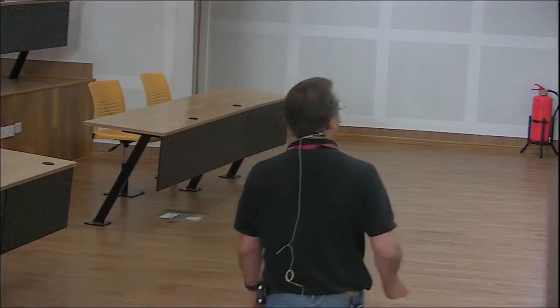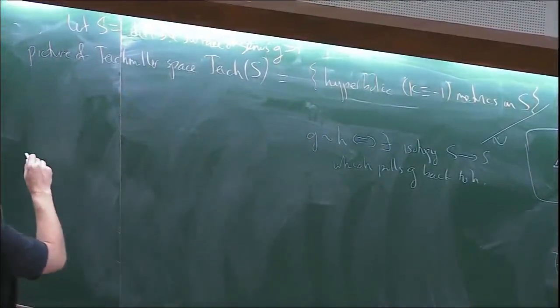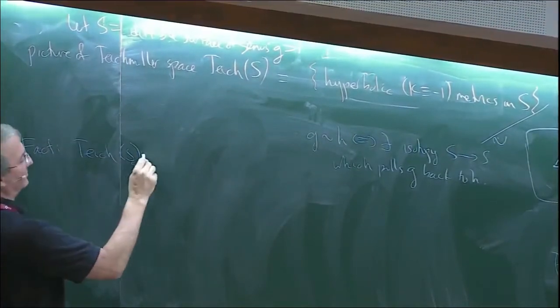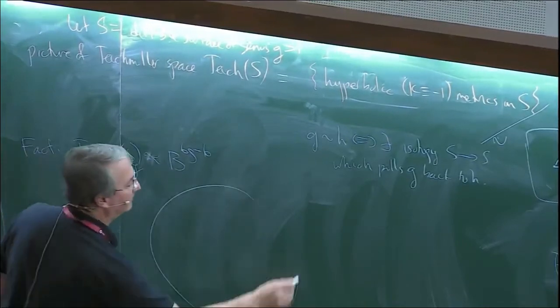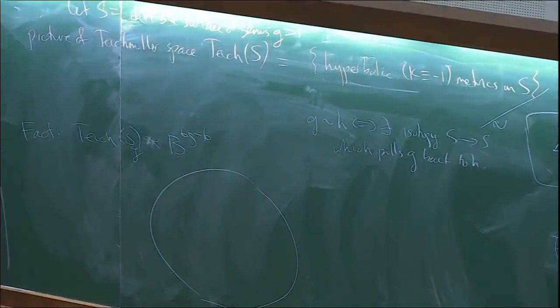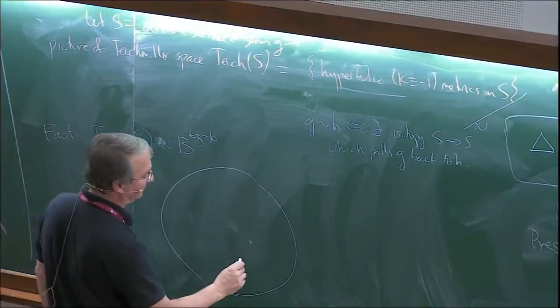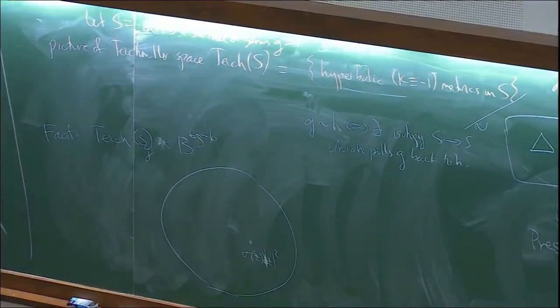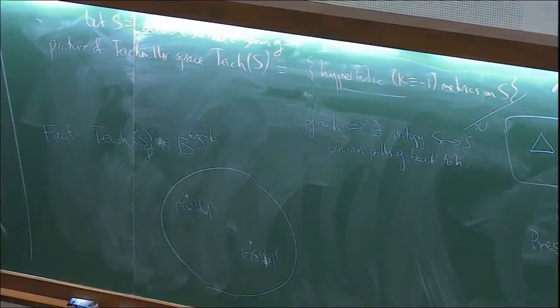Teichmüller space is a space of different hyperbolic metrics on the surface, where 'different' means you can't get from one to the other by a diffeomorphism homotopic to the identity. The fact is that Teichmüller space of a surface of genus g is homeomorphic to a ball of real dimension 6g − 6. What we've been talking about: sitting in this space are two hyperbolic metrics — σ(z)|dz|² and ρ(w)|dw|².